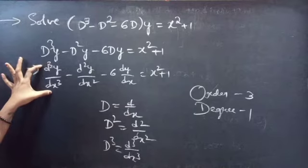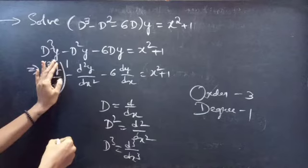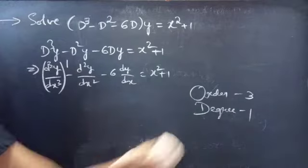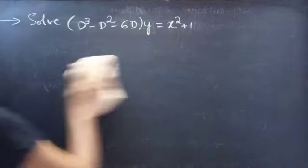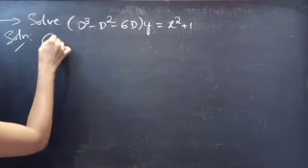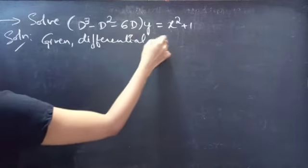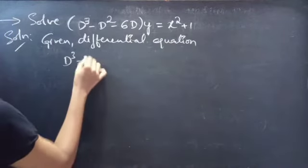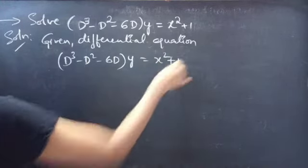Here our highest derivative is d³y/dx³. So our order will be 3, and the highest power of the highest derivative is the degree. Degree is 1. Now coming to the problem: given the differential equation (D³ - D² - 6D)y = x² + 1.